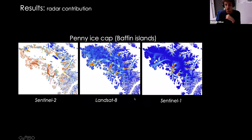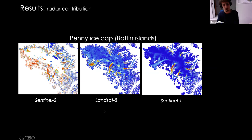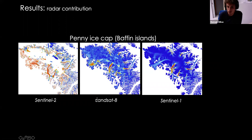Here I want to illustrate the high value of using radar data in polar regions. You have composite velocity mosaics for the Penny ice cap in Baffin Island: Sentinel-2 on the left, Landsat-8 in the middle, and Sentinel-1 on the right. You can see that in this case, neither Sentinel-2 nor Landsat-8 captures the pattern of flow in the interior of the ice cap. The only sensor that captures this is Sentinel-1, where you can see the ice streams extending up into the middle of the ice cap.